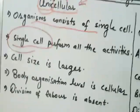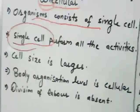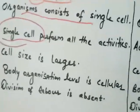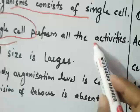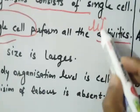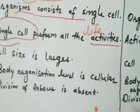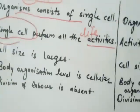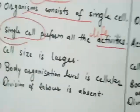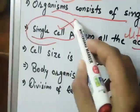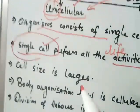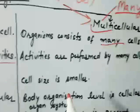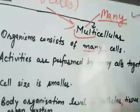Since the unicellular organism has only one cell and no other cells, that single cell must perform all life activities — it has no option. While multicellular organisms have many cells to perform life activities.